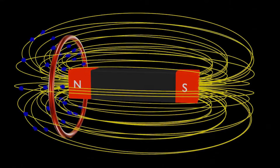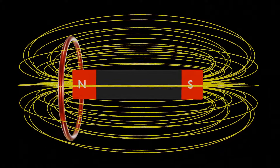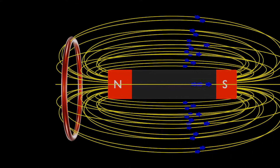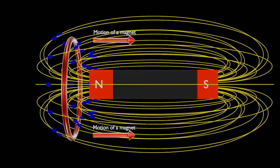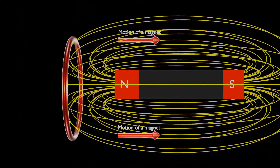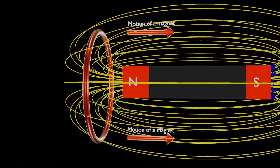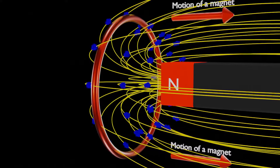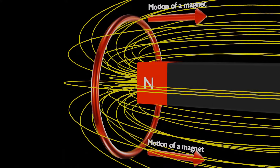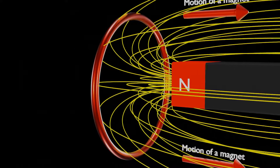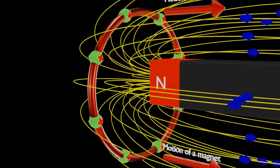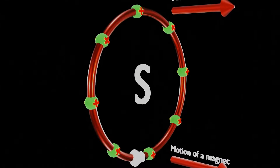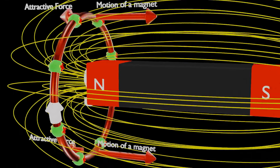Now let's move to the second case, in which we move the north pole of a bar magnet away from the coil. When the magnetic north pole is moving away from the coil, to oppose the change in magnetic flux, an electric current starts flowing in the coil such that it could attract the magnetic north pole and oppose the motion of the magnet. Therefore, according to Emil Lenz, electric current will flow in a clockwise direction to create a south pole, which attracts and opposes the movement of the magnet away from the coil.